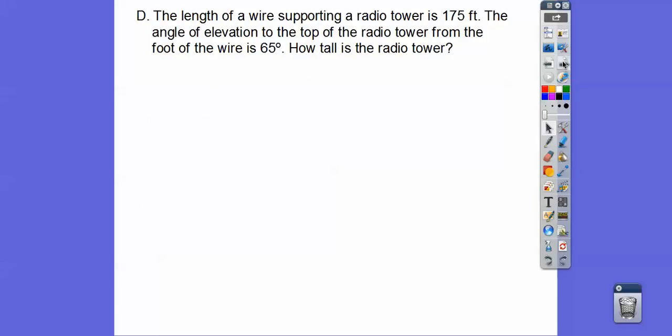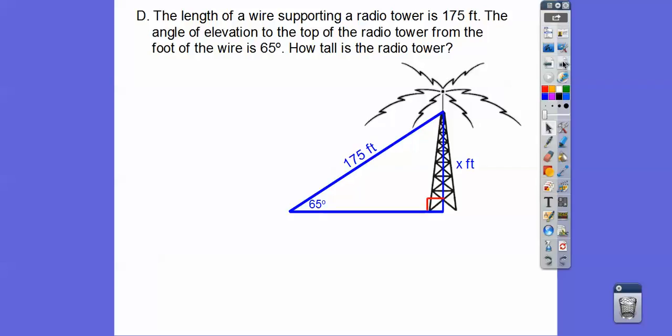Two more. So the length of a wire that supports a radio tower is 175 feet. The angle of elevation to the top of the radio tower from the foot of the wire is 65 degrees. How tall is the radio tower? Okay, so here's that wire right there, it's 175 feet right there. Here's the angle right there, and we're looking for this.